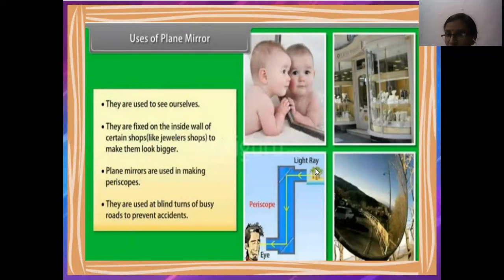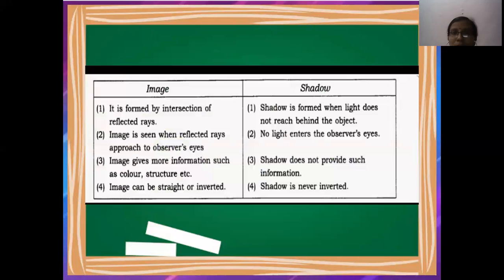In the periscope, the light moves in a straight line and reflects on the polished surface, the tiny and smooth surface. It reflects in this direction, then falls on another plane mirror, and then is reflected to the human eye. They are also used at the blind turns of busy roads to prevent accidents.